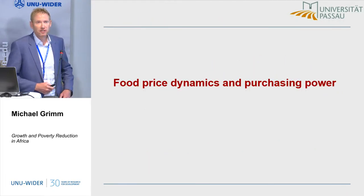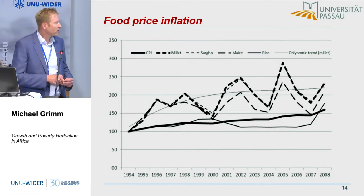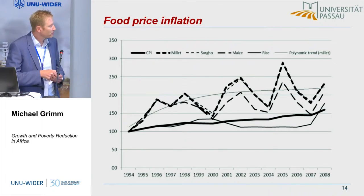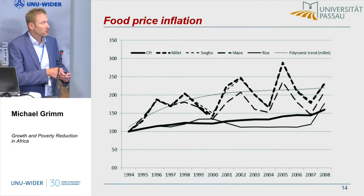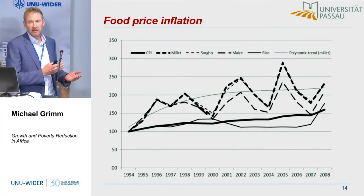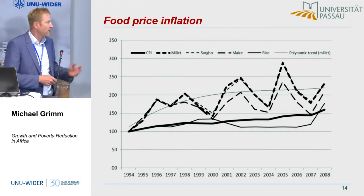What is the consequence of this low productivity increase on food prices? The main food crops people consume are millet, sorghum, and rice. Looking at the trend line for these three commodities, there's a huge increase in average price — it's becoming more and more expensive for households to finance their consumption. The CPI increase is much lower. Rice, where the increase is not as large, has a much higher cost per calorie, so it's not a commodity poor households can substitute in — they have to rely on these other three.